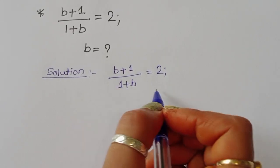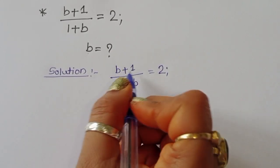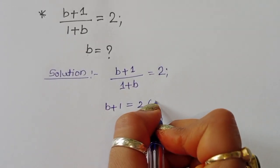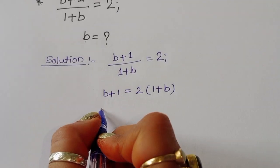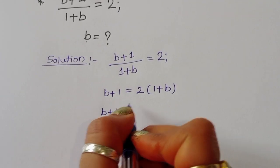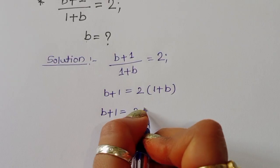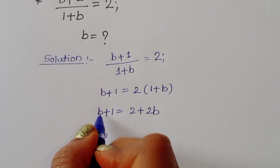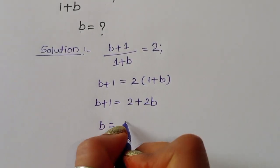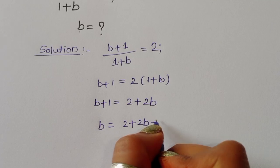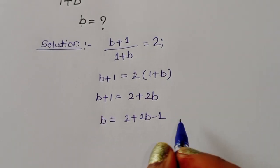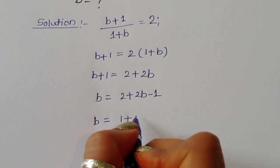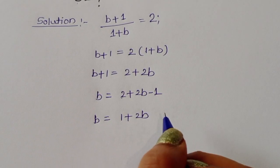We can write b + 1 is equal to 2 times (1 + b), which gives b + 1 = 2 + 2b. So b = 2 + 2b − 1, and since 2 − 1 = 1, we get b = 1 + 2b. This is our working expression for b.